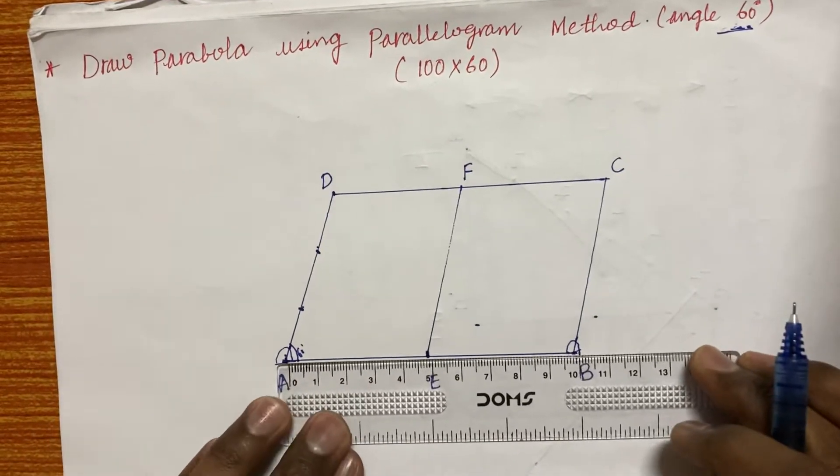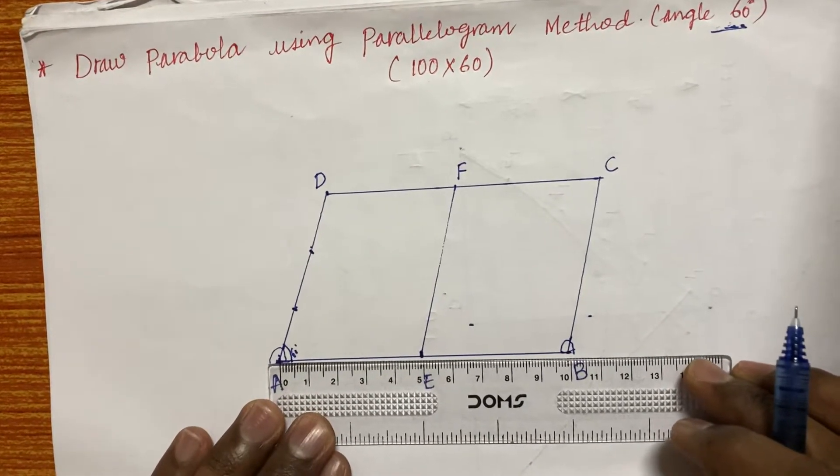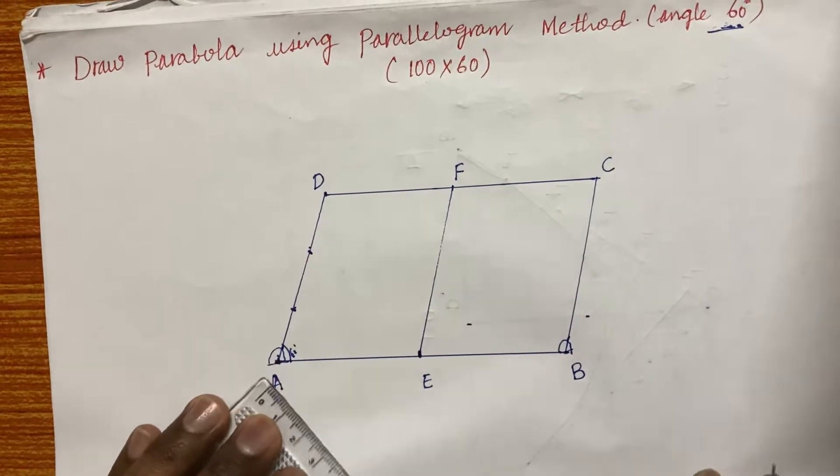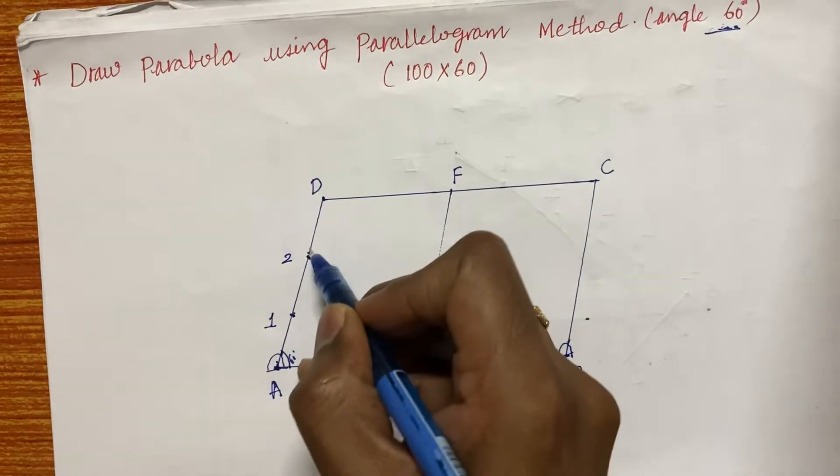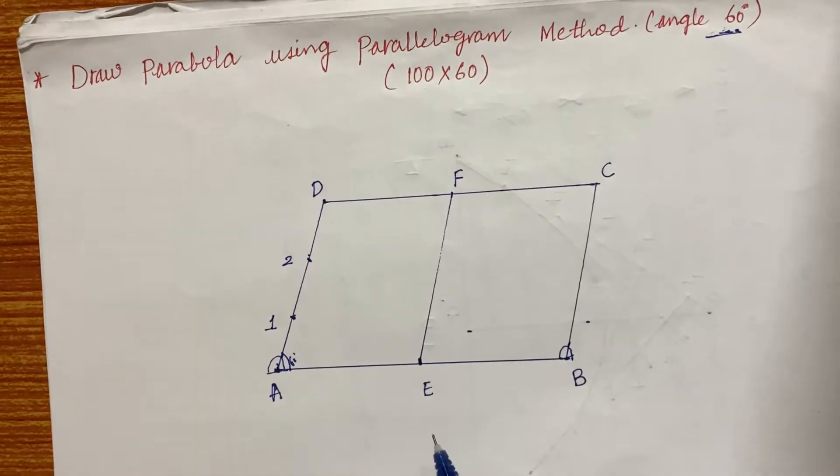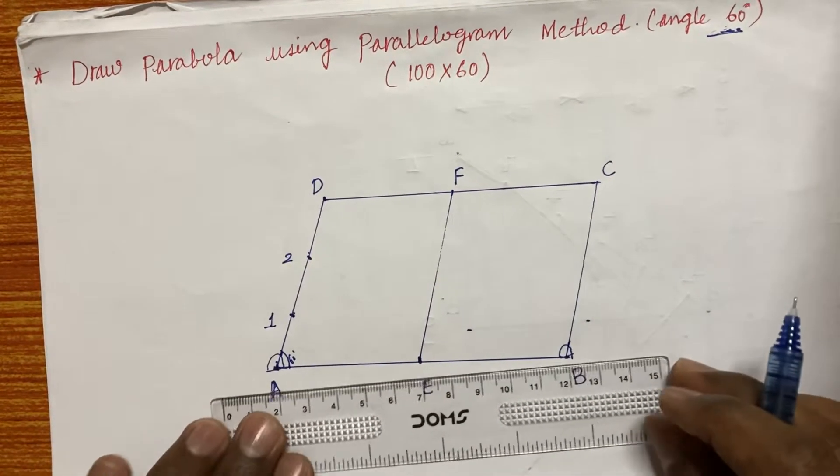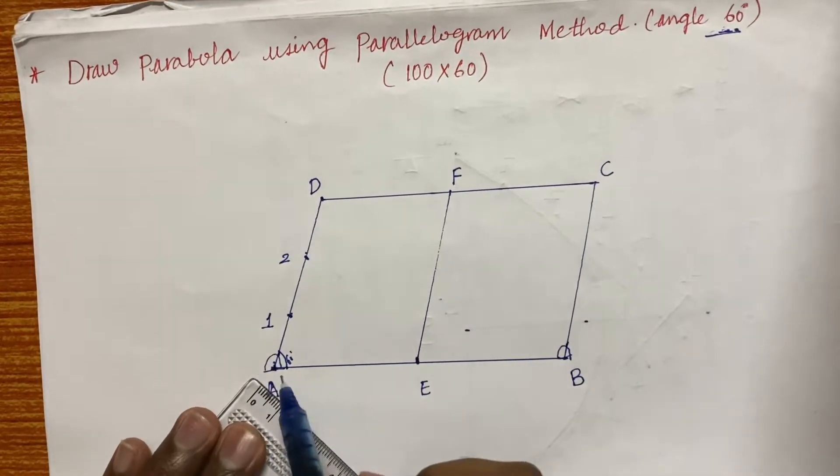Later, I am going to divide even this also into similar number of equal divisions. Let us say this is 1 and this is 2. 1, 2 and 3. Three equal divisions. Now you can divide into three and you can divide into four also.